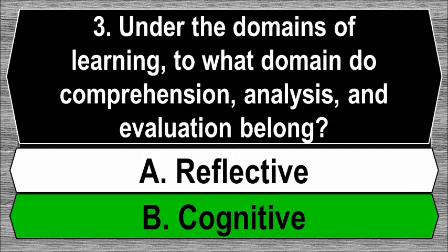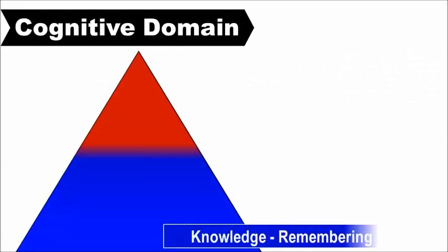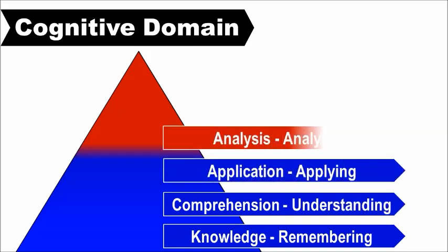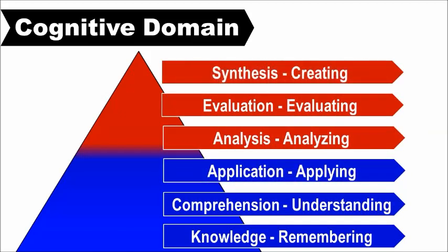The best answer is B, cognitive. The cognitive domain involves the development of mental skills and the acquisition of knowledge. The six categories are: knowledge (remembering) — the ability to recall data or information; comprehension (understanding) — the ability to understand the meaning of what is known; application (applying) — using knowledge in a new situation; analysis (analyzing) — differentiating facts and opinions; evaluation (evaluating) — making judgments about the importance of concepts; and synthesis (creating) — integrating elements to form new meaning.